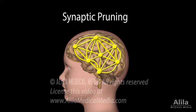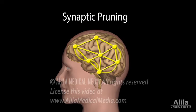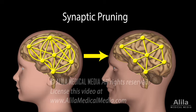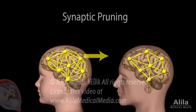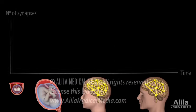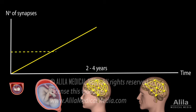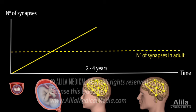Synaptic pruning is the process of synapse removal that takes place naturally as part of brain maturation. A human brain starts its development in early embryonic stage and reaches the maximum number of synaptic connections sometime in early childhood, at which point it is about double of what is normally present in an adult brain.